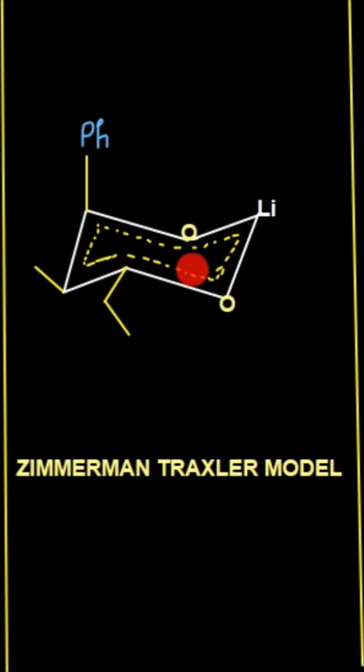What you have to do is look for the substituents present on this particular ring. First of all, you have to consider two substituents which are present on the lithium enolate.